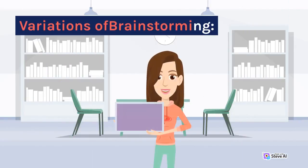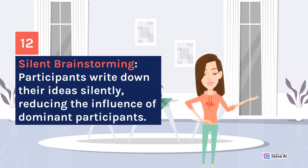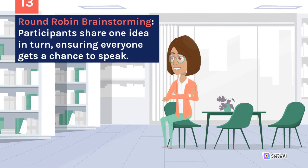Variations of Brainstorming. Silent Brainstorming: participants write down their ideas silently, reducing the influence of dominant participants. Round Robin Brainstorming: participants share one idea in turn, ensuring everyone gets a chance to speak.